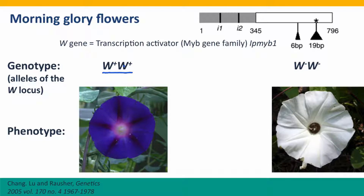A white-flowered morning glory has two copies of the defective allele — that's the allele with the frameshift insertion — and its genotype we write simply as W- W-, with the minus indicating this is a non-functional allele. We can certainly have more complex names if we want to distinguish more complex alleles, but for now we're simply distinguishing functional alleles from non-functional alleles.